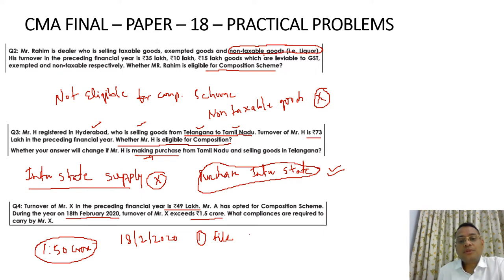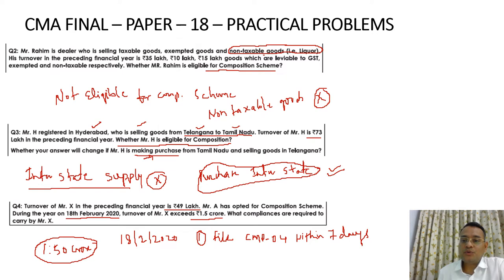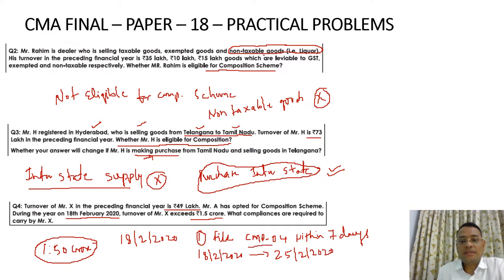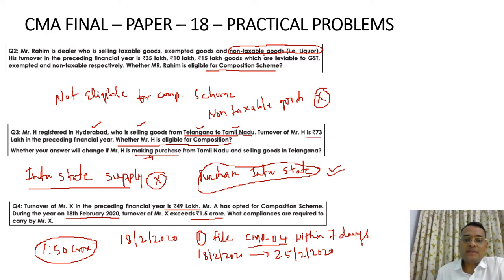First, Mr. X is to file Form CMP-04 within seven days after he becomes liable to opt out from composition scheme. Since his turnover exceeds on 18th February 2020, he has to submit on or before 25th February 2020. All forms related to composition scheme start with CMP.